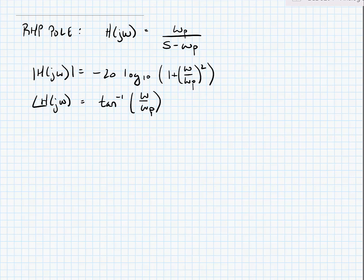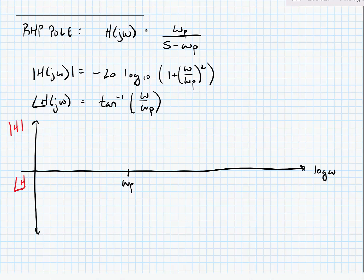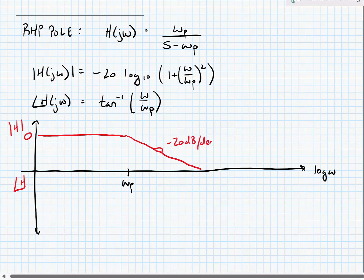Now we can do our Bode plots. Our magnitude response is exactly the same as it was for the left half plane pole. Our straight line approximation, we draw a straight line at 0 dBs out to omega p, and then we have a straight line roll off at minus 20 dBs per decade of frequency increase. But our phase shift now starts at 0 degrees, at omega p it's plus 45 degrees, and well beyond omega p it's 90 degrees.